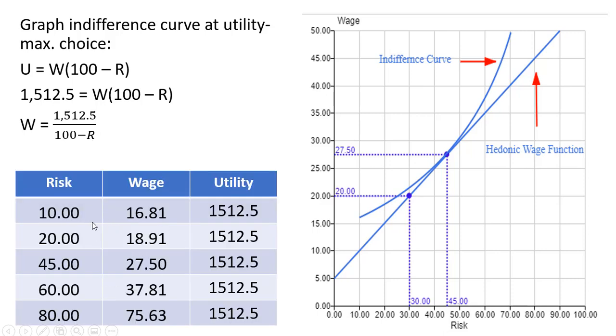I have a table here, and I'm going to put in various levels of risk into this equation and we'll get the corresponding wage. If we plug in R equals 10 and W equals 16.81 into the utility function, you would get a level of utility of 1512.5. Here's a bunch of other combinations of risk and wages that give the same level of utility and fall on the same indifference curve.